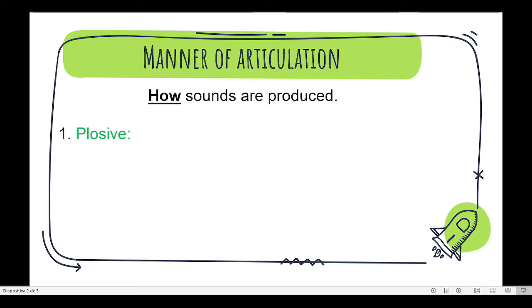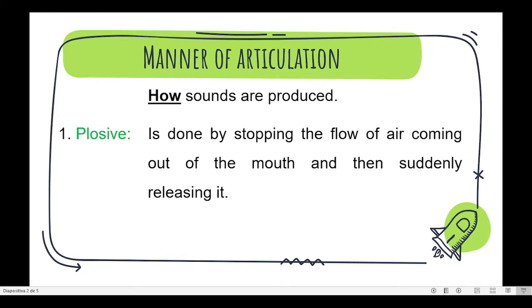Number 1. Plosive is done by stopping the flow of air coming out of the mouth and then suddenly releasing it. We can find the sounds: p, b, t, d, k, g.